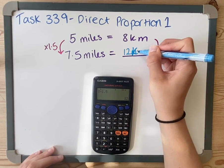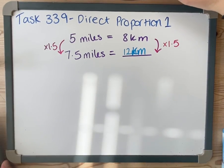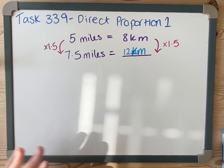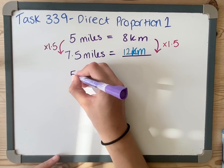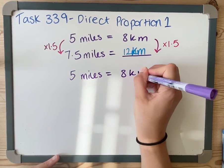So 7.5 miles is 12 kilometers. I'm going to do another one and keep that at the top so you can see it. My next one: I've got the same thing again—five miles is eight kilometers—and